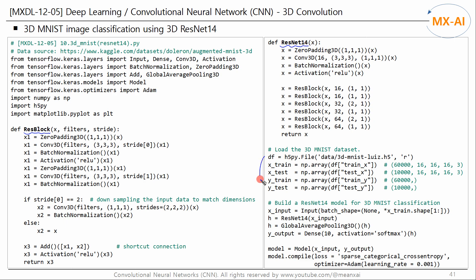Load the 3D MNIST dataset. Now we build a ResNet-14 model for 3D MNIST image classification. Create an input layer. The input layer receives 5-dimensional data like this. Then we add a ResNet-14 layer and a 3D global average pooling layer. Finally, we add an output layer to classify the input image into 10 categories. Create and compile this model.